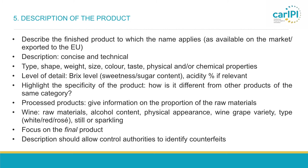A relevant example could be coffee. In the case of coffee, it should always be clear whether the GI should only cover, for example, green coffee beans or also roasted coffee. If it should also cover roasted coffee, please clarify whether roasting only takes place in your country or whether it should also be done in the EU. In that case, it would have to be confirmed that GI controls would also be applicable to roasters located in the EU.